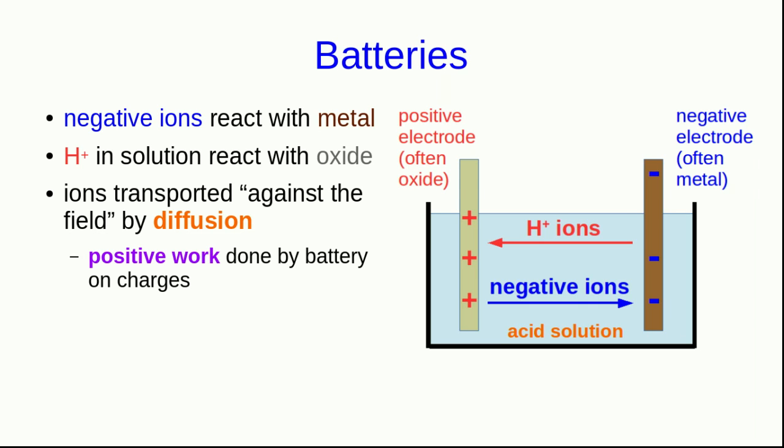And so, as always with charge separation, positive work is being done by the battery on the charges. But note that this positive work is being done chemically. The power source of all of this is the chemical reactions going on at the electrodes.